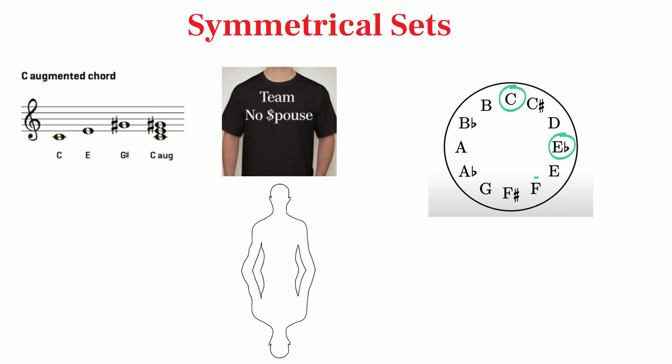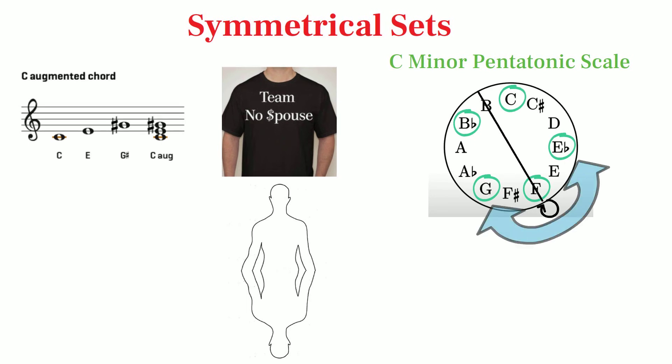Let's use the minor pentatonic scale as an example again. Can you locate where we would have to draw the line of symmetry in order for the pitches to invert onto themselves? The line can be drawn through F and B for the pitches to map onto each other, meaning that the pentatonic set is symmetrical and has no inversion partner.